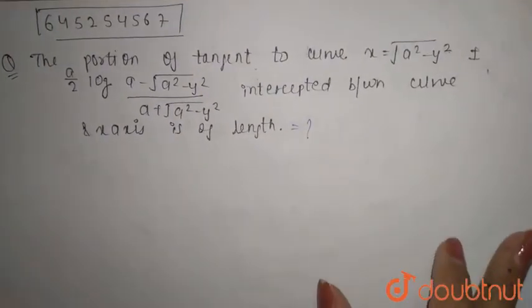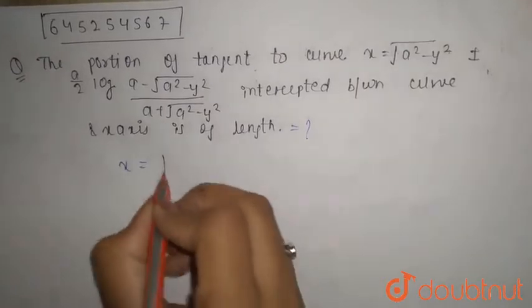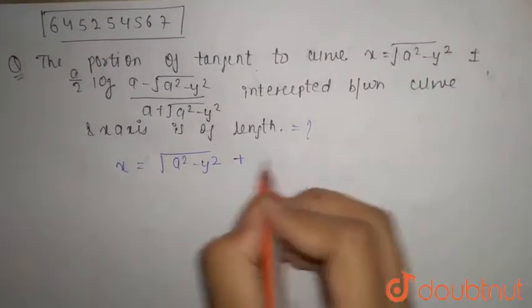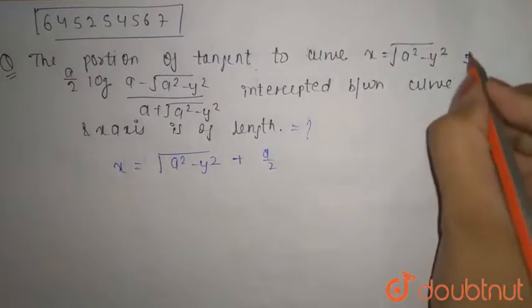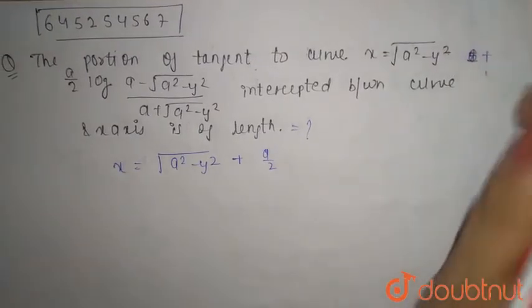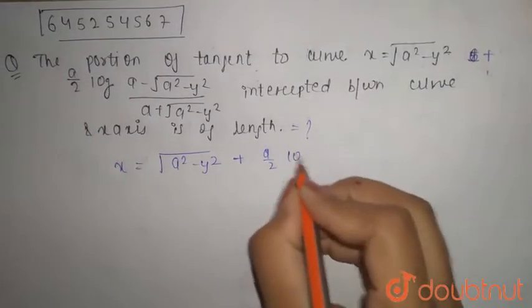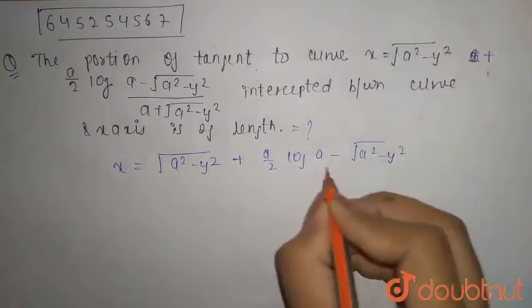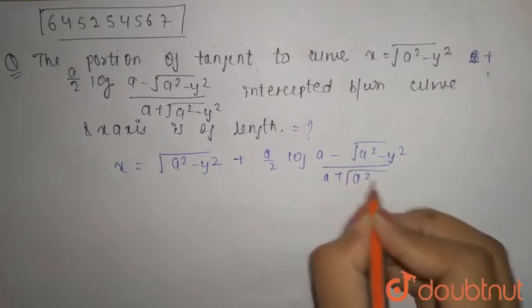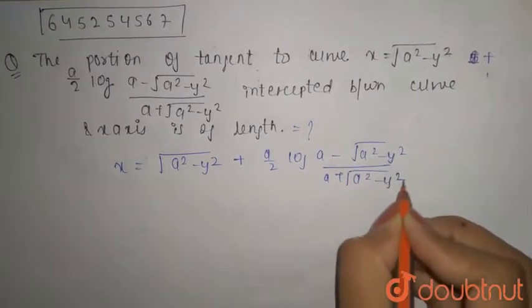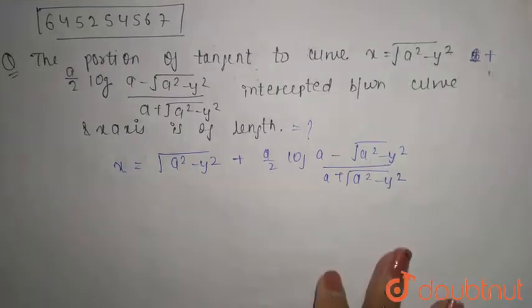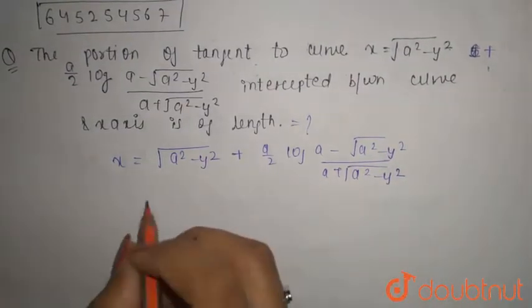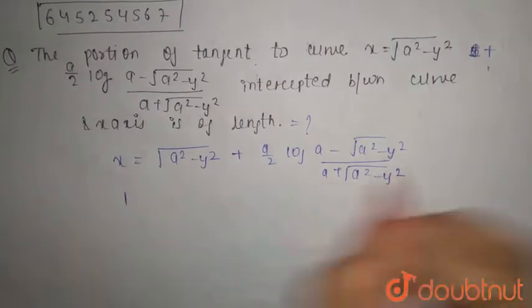First of all, what we have given is x equals root of (a² - y²) plus a/2 — here it is not plus-minus, it will only be plus — log of (a minus root of (a² - y²)) divided by (a plus root of (a² - y²)). So this is given, and we are going to differentiate with respect to x.